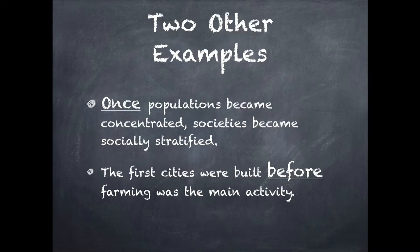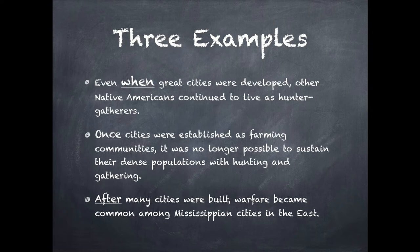Let's look at two more examples using prepositions. Once populations became concentrated, societies became socially stratified. The first cities were built before farming became the main activity — 'before' is the preposition showing sequence. When great cities were developed, other Native Americans continued to live as hunter-gatherers. After many cities were built, warfare became common among Mississippian cities in the East. Notice the prepositions in these examples: when, once, and after.